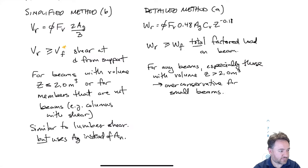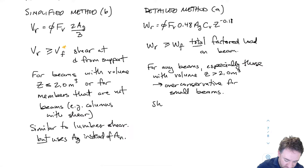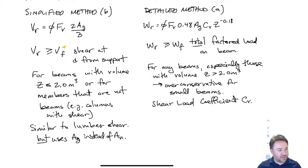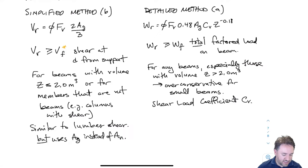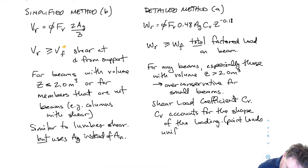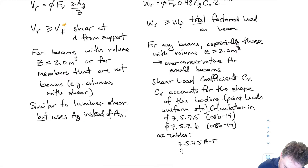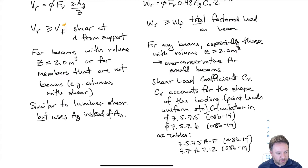What's the difference between putting a uniform load versus having point loads? How does the detailed method take into account the distribution of shear over the beam since I'm just comparing total loads? That's why we have the shear load coefficient CV. You can see it in the equation: WR equals phi times FV times 0.48 times AG times Z to some power, times CV. CV is my shear load coefficient, and this is what accounts for the shape of the loading.